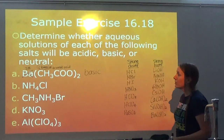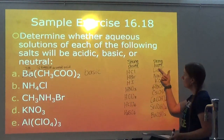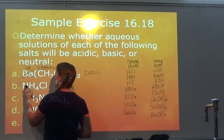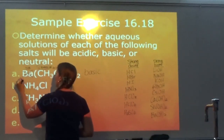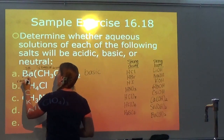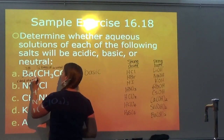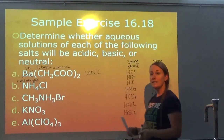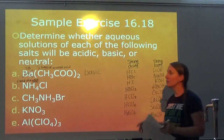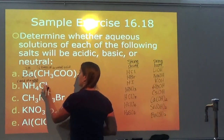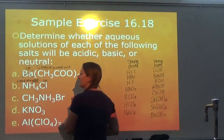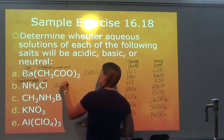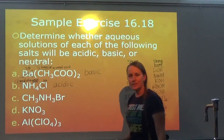For NH₄Cl: NH₄⁺ does not come from a strong base, so it comes from a weak base — it is the conjugate acid of a weak base. Cl⁻ comes from a strong acid, so it does not affect the pH. Since I have a conjugate acid floating around, the solution is acidic.